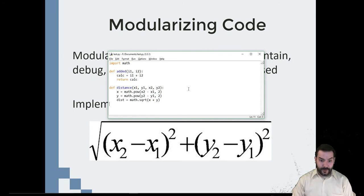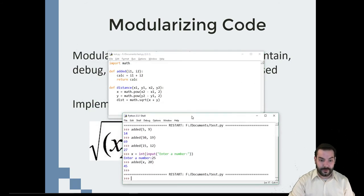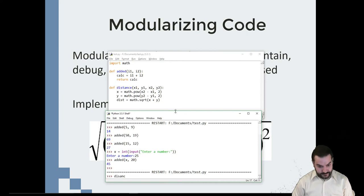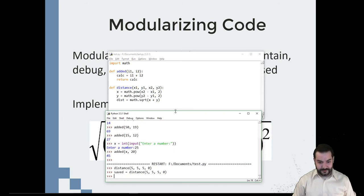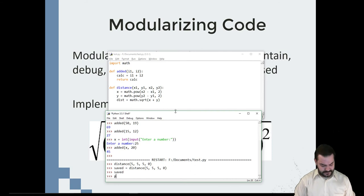So now if we run it, all right, it got loaded into memory just like before. Distance, distance, 5, 5, 5, 0. In theory, the distance should be 5 because of the point at 5, 5 and 5, 0. So 5. So when I hit enter, I don't get that. Oh, well, it's because I didn't save it. Clearly you didn't save it. So I don't know. Save equals that. Saved. First saved. None.